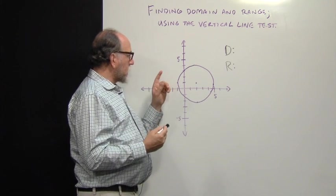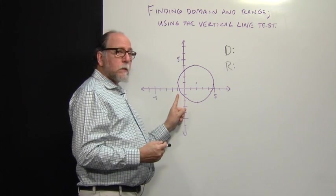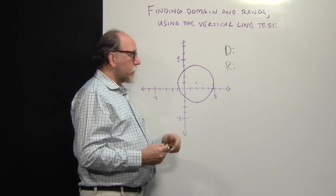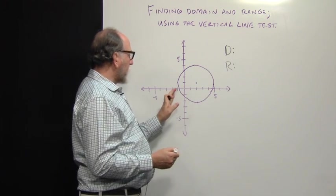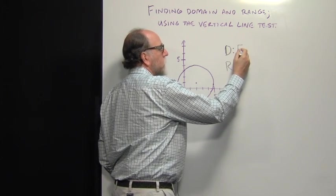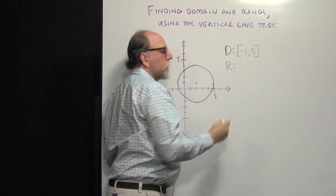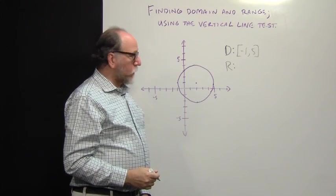So we can see that this graph starts here, and you can see that's negative 1, and goes to 5. It includes both negative 1 and 5, so we're going to use brackets to write the interval notation: negative 1 comma 5. So that's the domain of that graph.